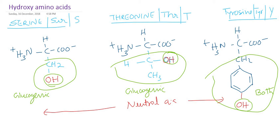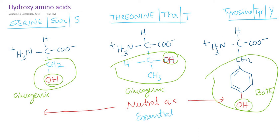Only threonine is an essential amino acid and must be supplied in our diet. Tyrosine is non-essential because it can be synthesized from phenylalanine, and serine is also a non-essential amino acid. That means our body can synthesize serine and tyrosine, but threonine is essential.